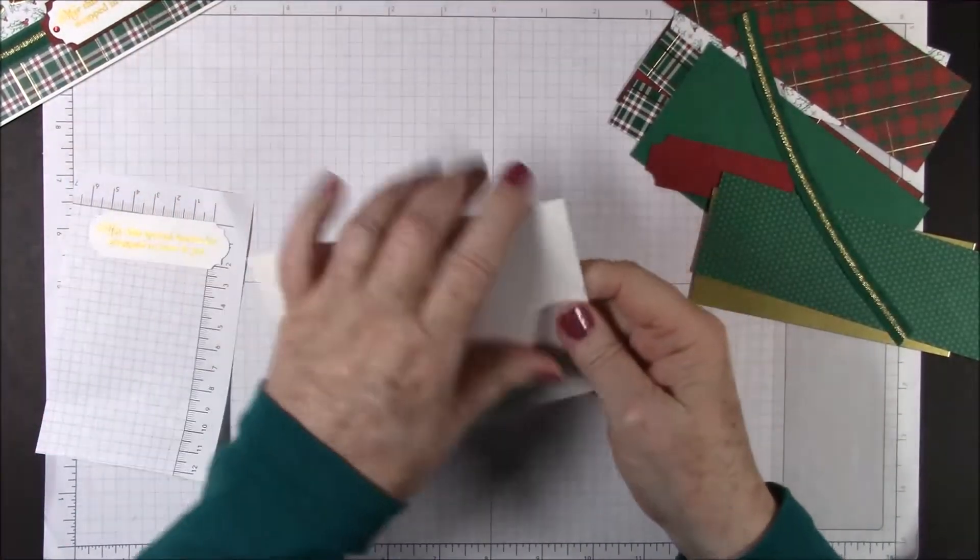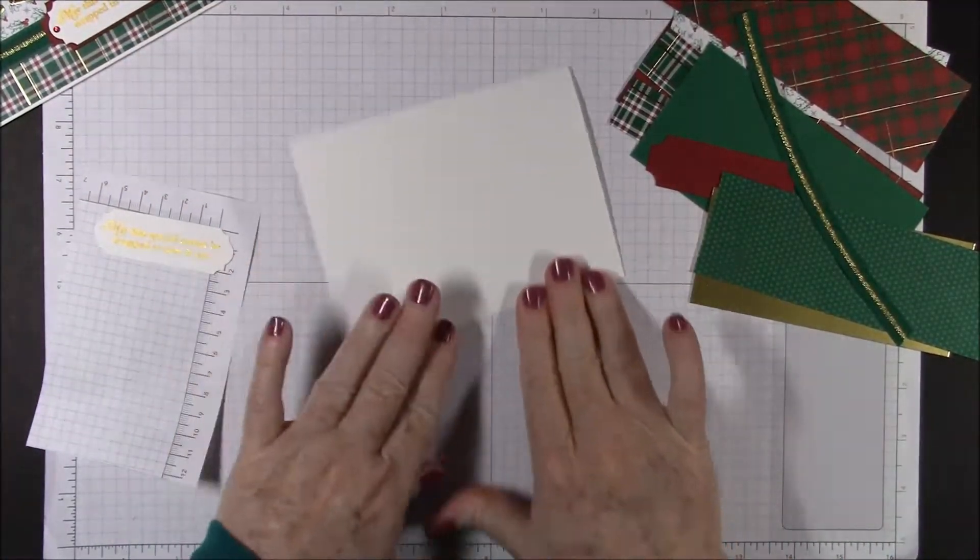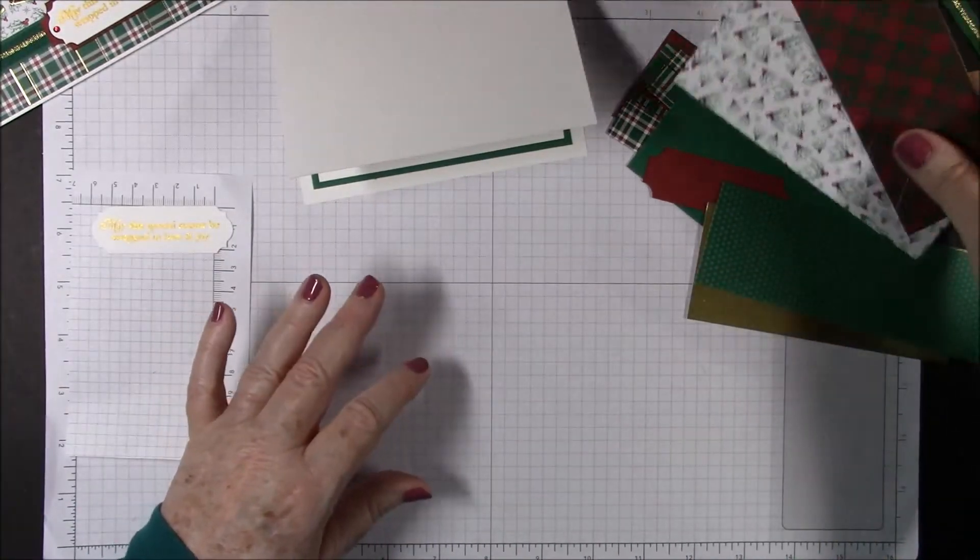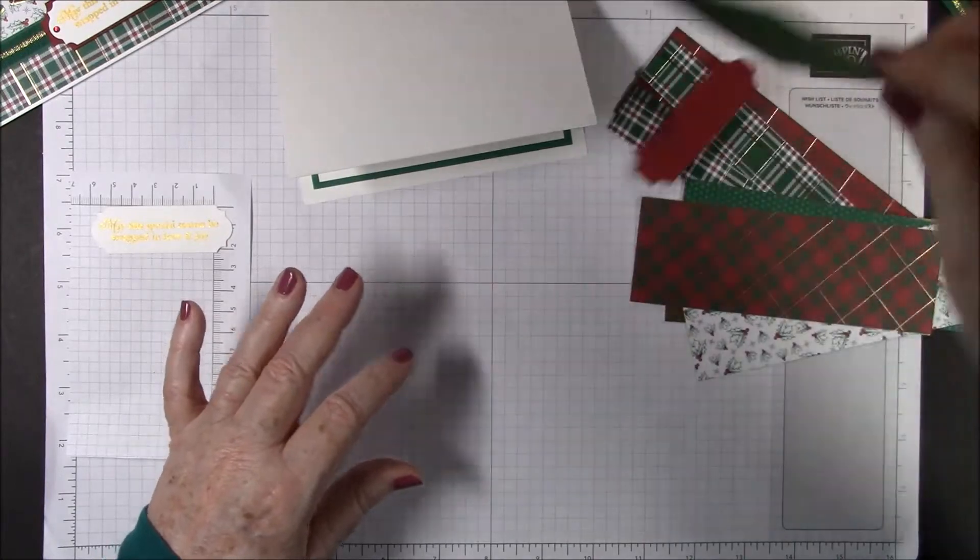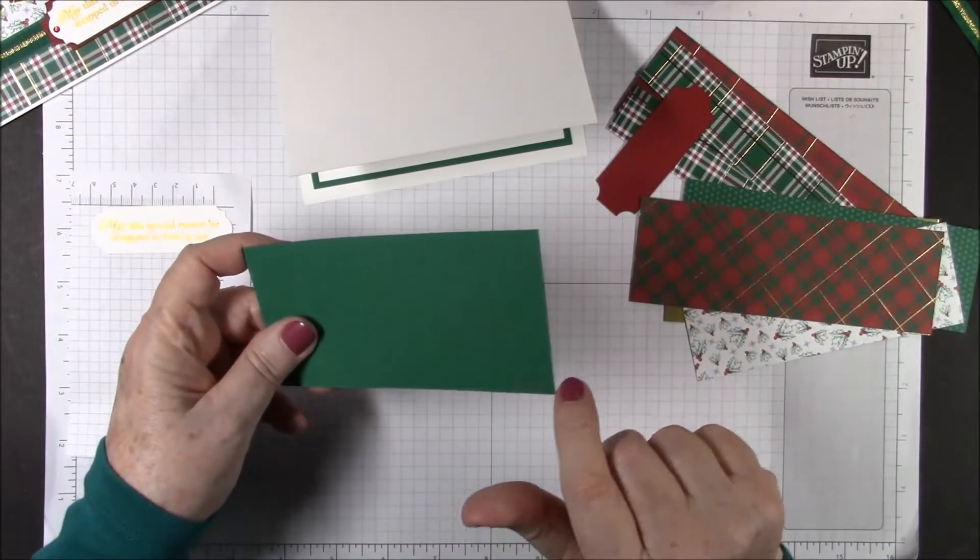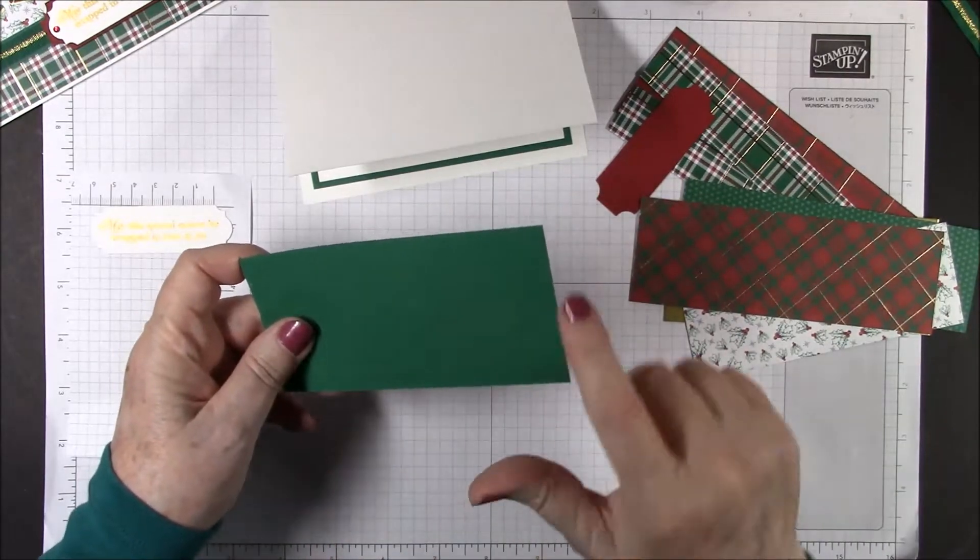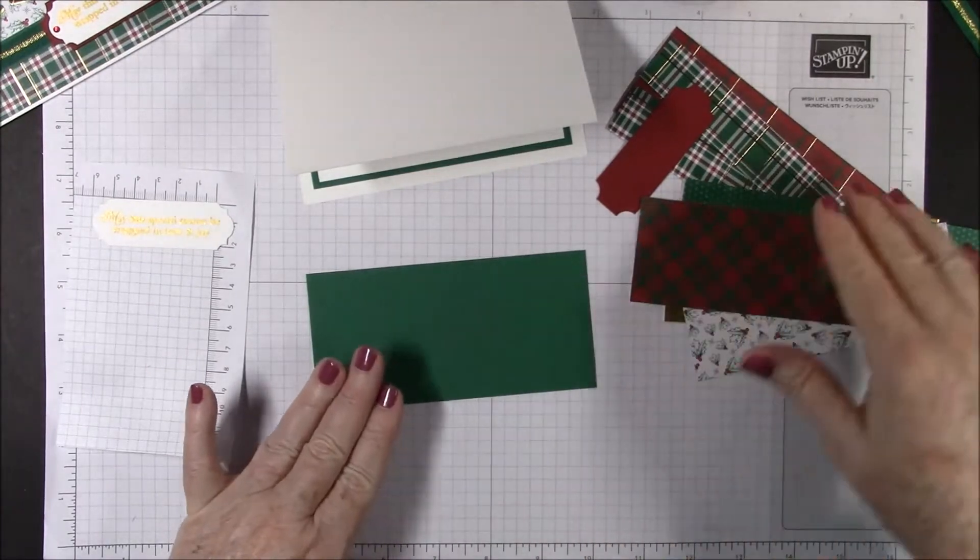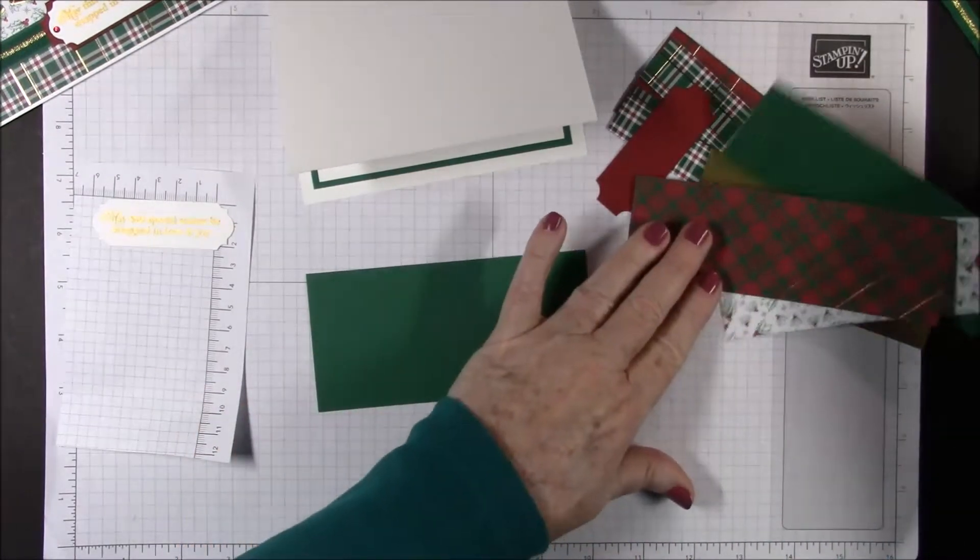Now we're ready to decorate the outside of our card. We'll start with a piece of shaded spruce that is five and three eighths by two and five eighths, and that's going to be pretty much our base. We have a piece of the DSP.